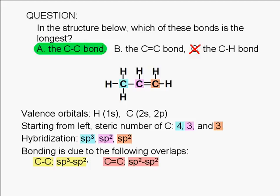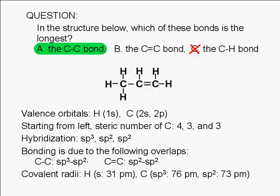In fact, we can estimate what all these bond lengths are using covalent radii that we can look up. From webelements.com, the values you'll find are 31 picometers for hydrogen, 76 picometers for an sp3 orbital of carbon, and 73 picometers for an sp2 orbital of carbon.